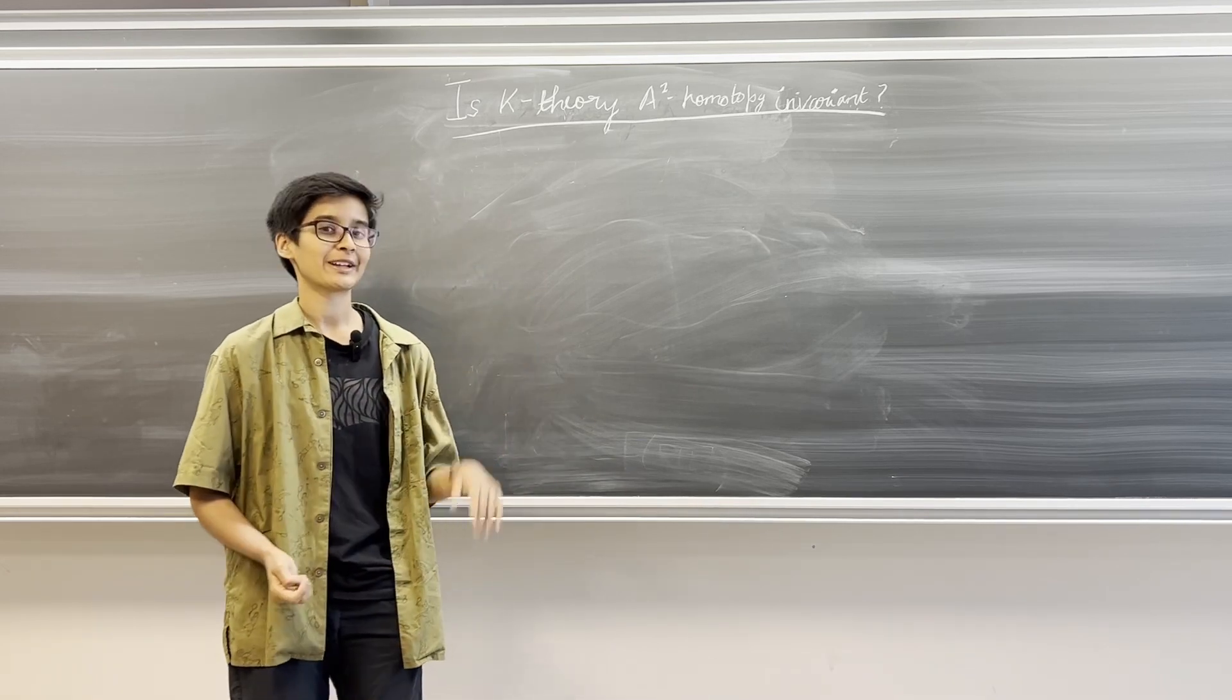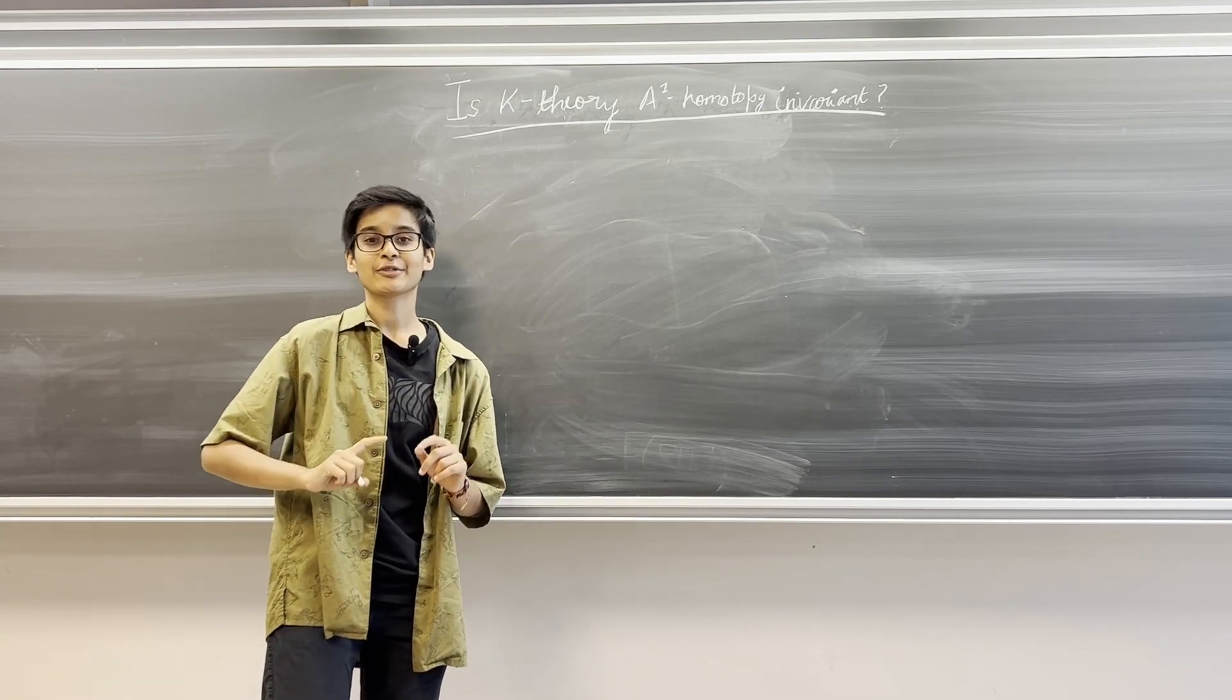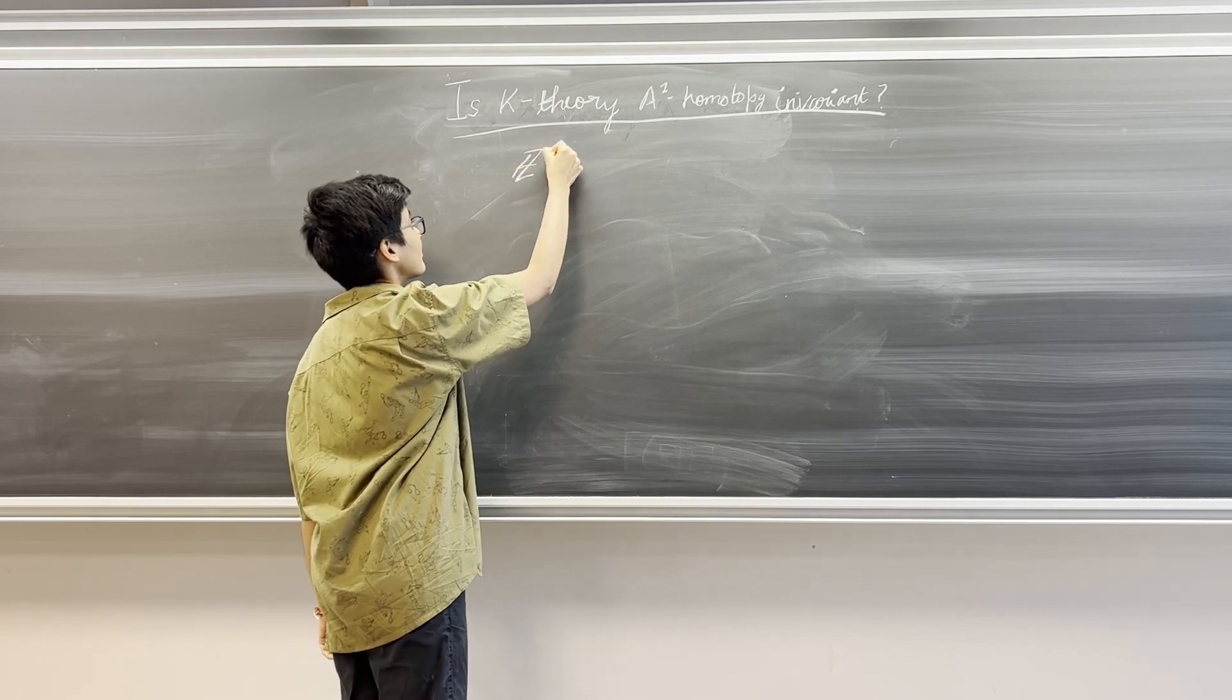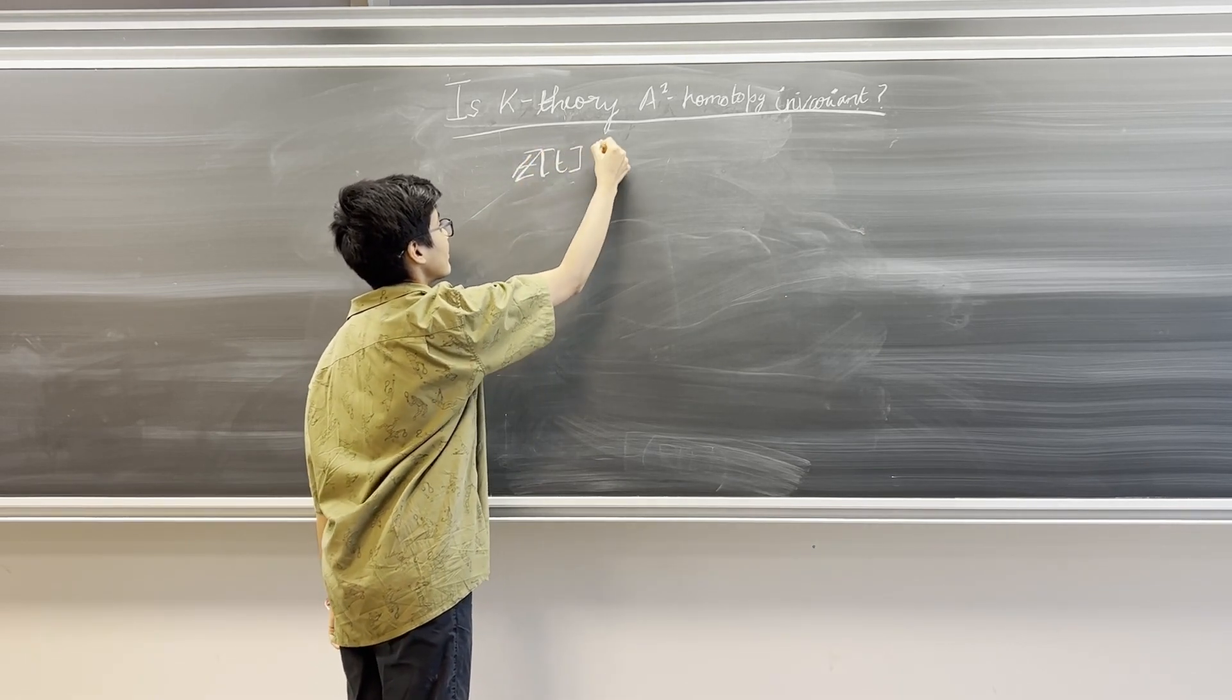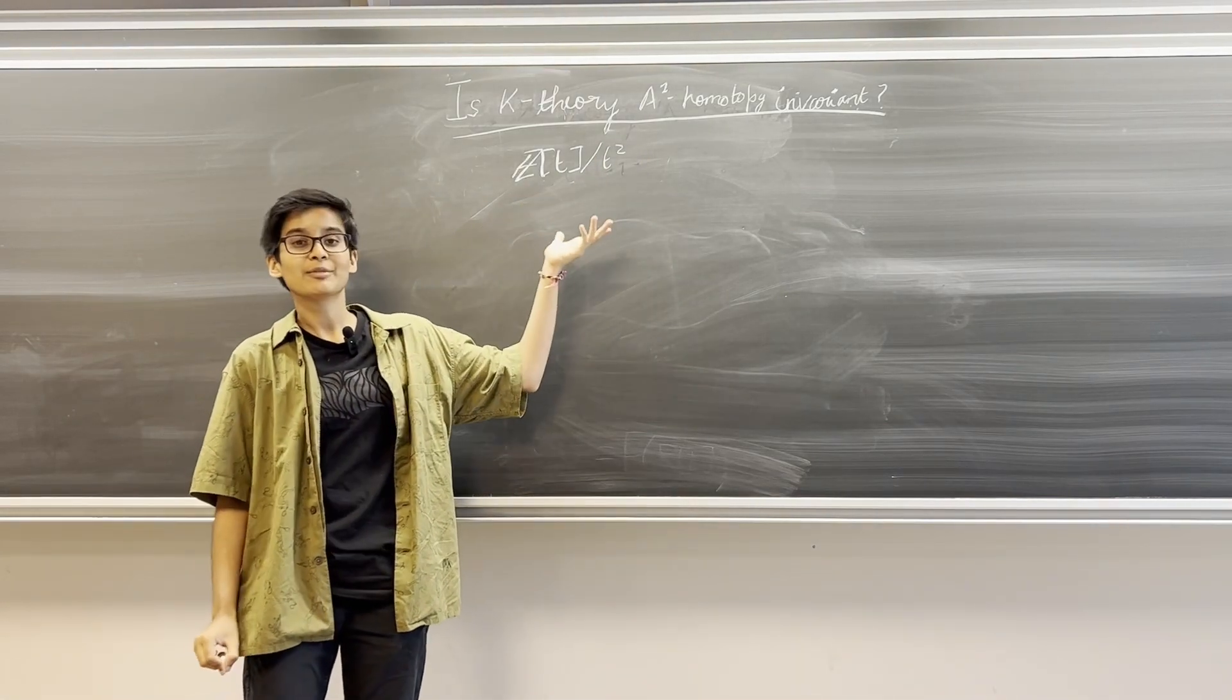Let us look at a counter example of this. We consider the ring given by ℤ[T] over T². When we consider the scheme related to this ring, we call it the thickening of the affine line.